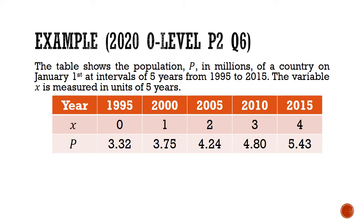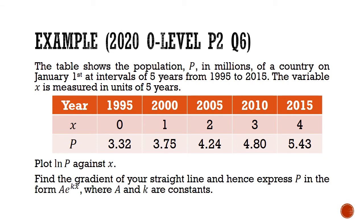The variable x is measured in units of 5 years. This question asks us to, first plot ln P against x, then find the gradient of the straight line, and hence express P in the form of Ae to the power of kx, where A and k are constants to be found.